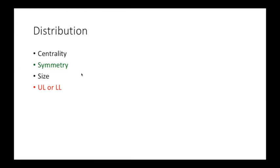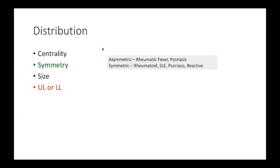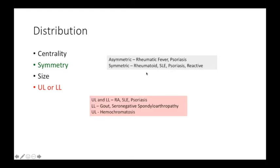We look at the distribution — whether the central or axial skeleton is involved — and the symmetry. Asymmetric presentations are usually seen in rheumatic fever, psoriasis, and reactive arthritis. Rheumatoid arthritis, SLE, and reactive arthritis can also be considered. Psoriasis can present in a symmetric or asymmetric manner. Upper and lower limb involvement is important: spondyloarthritis and gout are largely lower limb; hemochromatosis tends to involve upper limbs; rheumatoid arthritis, SLE, and psoriasis have no predilection for either limb.